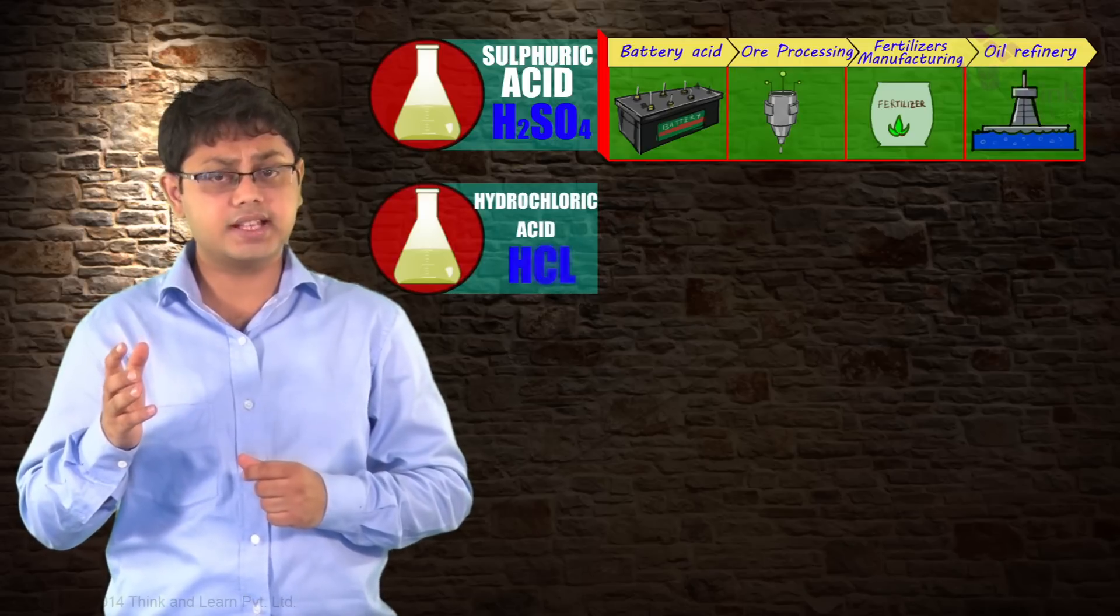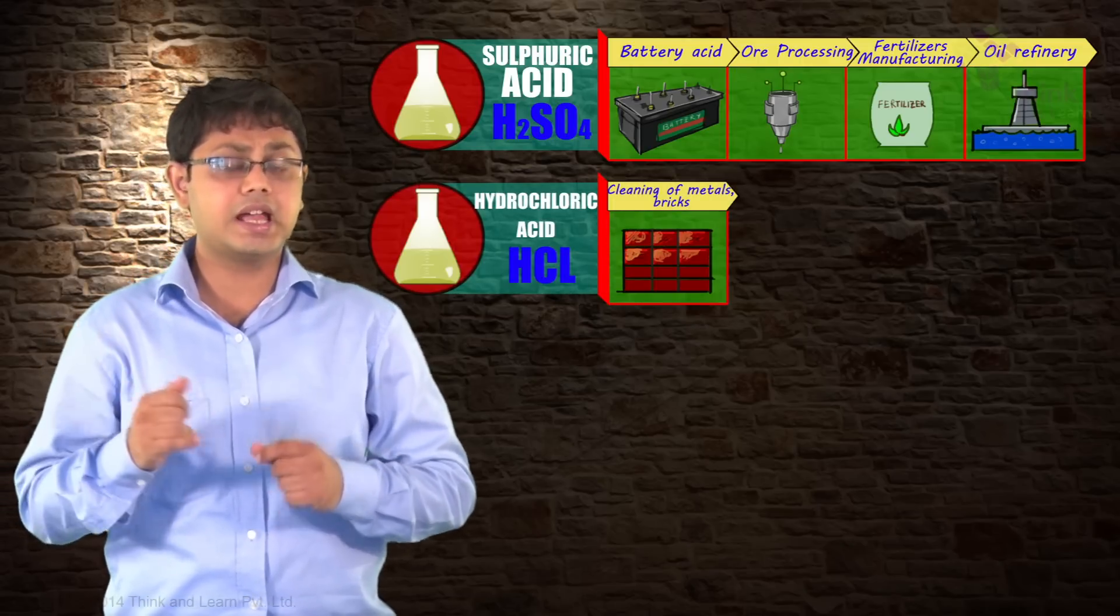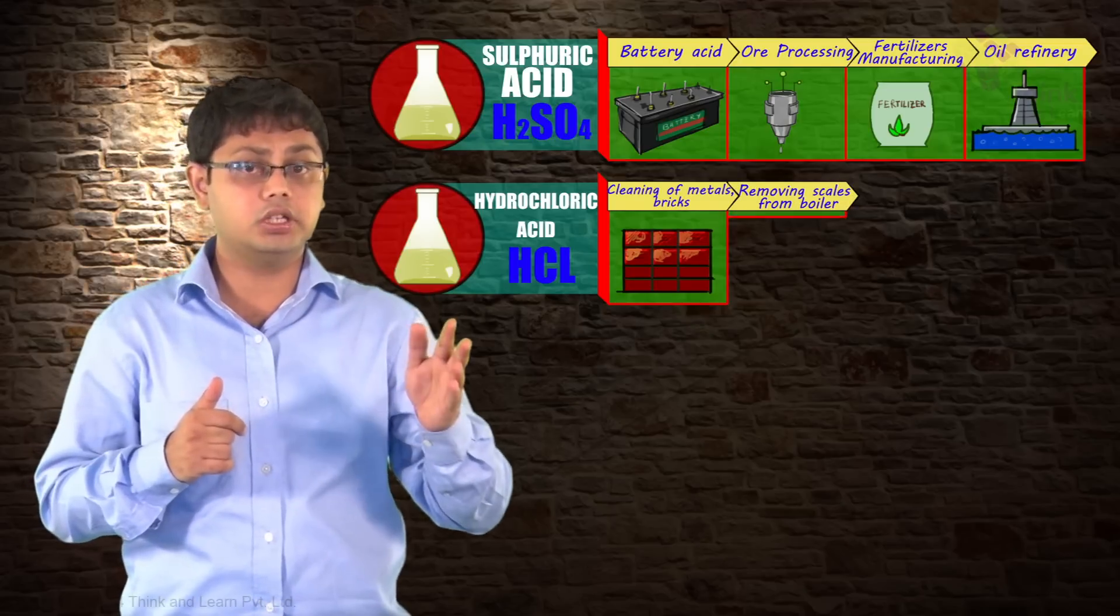When we talk about the next acid, which is hydrochloric acid, it is used as a strong cleaning agent for metals and bricks and removing scales from boilers. I'm going to answer one of the questions that we put to you in the beginning.